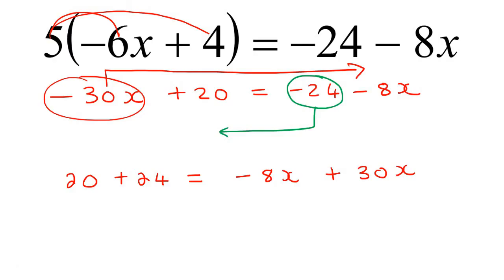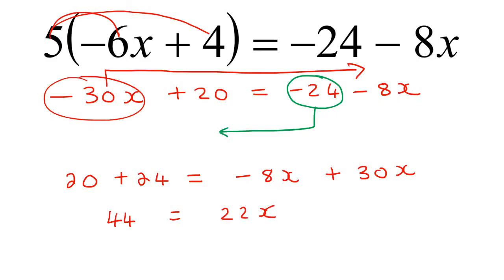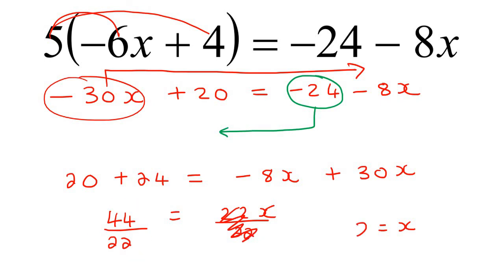Now we can simply combine. So 20 plus 24 is 44. And then minus 8x plus 30x is going to be 22x. We want to get x by itself, so we divide by 22 on both sides. And so x would be equal to 44 divided by 22, because this part cancels, so 44 divided by 22 would be 2.